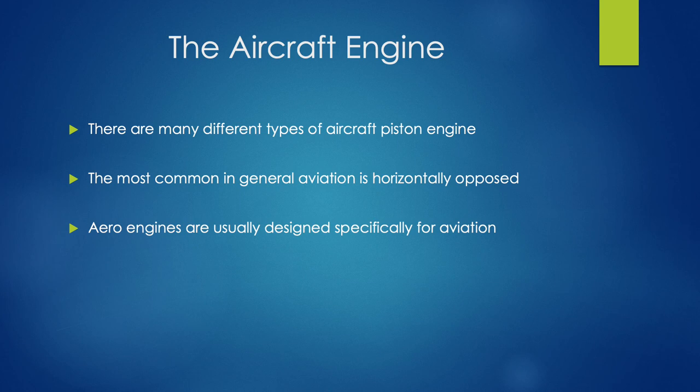Now we're going to look at an aircraft engine, and more specifically the kind of engines we will be using, which are piston engines. There are lots of different types of piston engine aircraft. However, most engines in general aviation are horizontally opposed, and we'll look at that slightly later on. Normally aviation engines are specifically designed with higher tolerances — they're generally stronger, lighter to save weight, and they have more reliability.